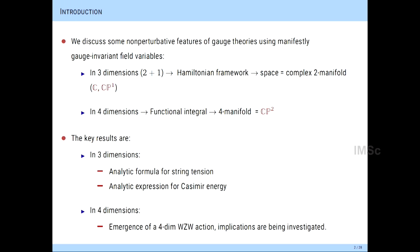Let me alert you to what the results would be like. The key results in three dimensions include an analytic formula for string tension — an old result I've worked on for many years — and a relatively new analytic expression for the Casimir energy in the non-abelian case, which I will compare with lattice results. In four dimensions, the key result is the emergence of a four-dimensional Wess-Zumino-Witten action, which controls the integration measure for the theory. The implications are still not very clear — this is very new, still ongoing work.